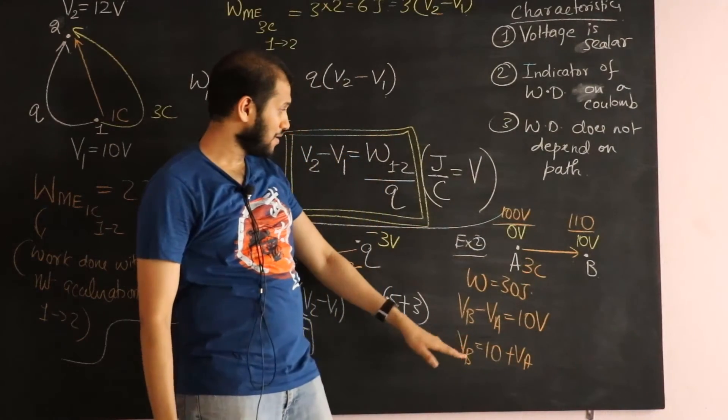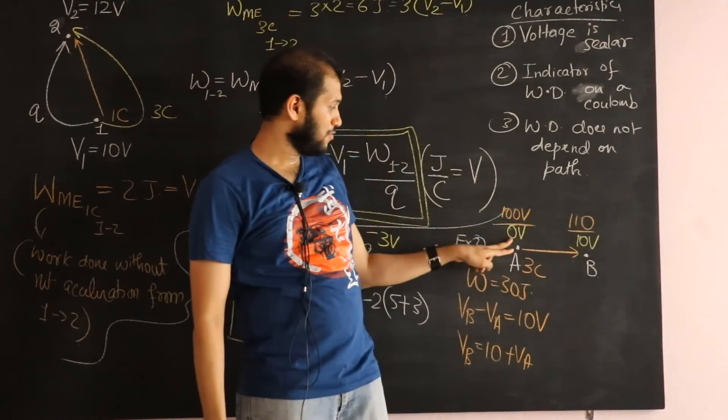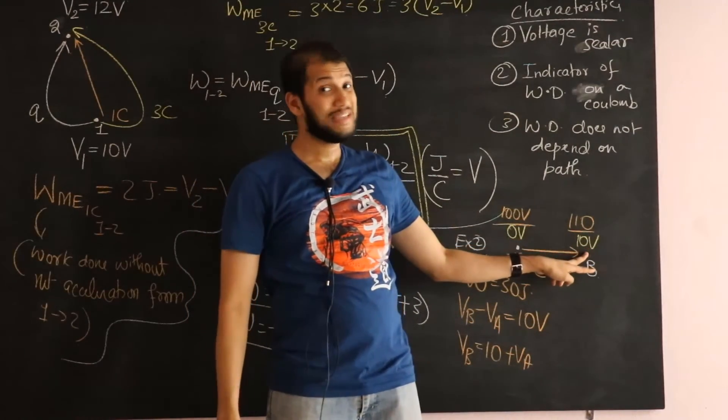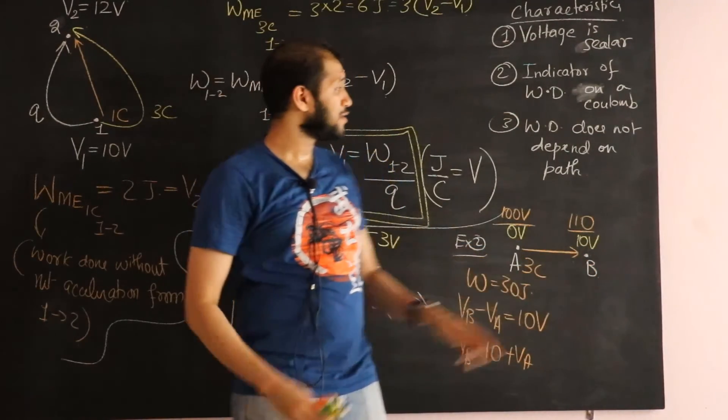And then using that point, I'm going to calculate voltage at every other point in the room. That's exactly what I did over here. I assign an arbitrary value for voltage at A, and then the voltage at B gets fixed.